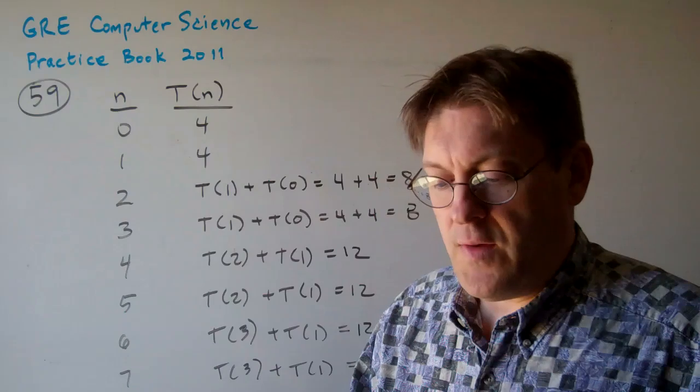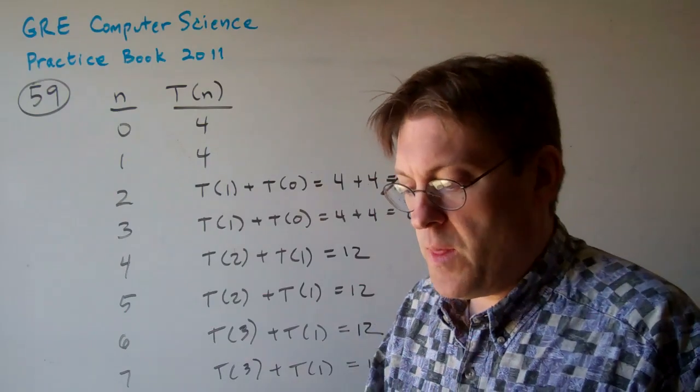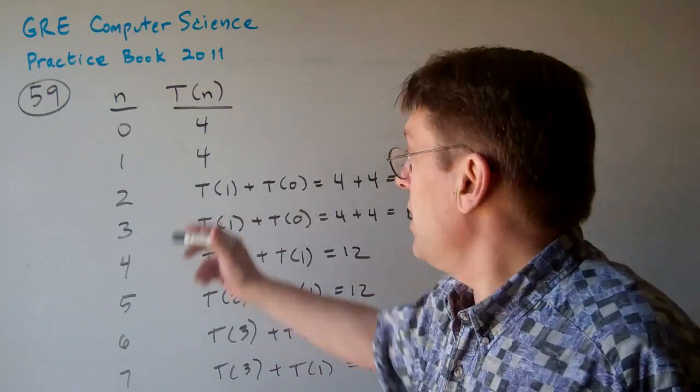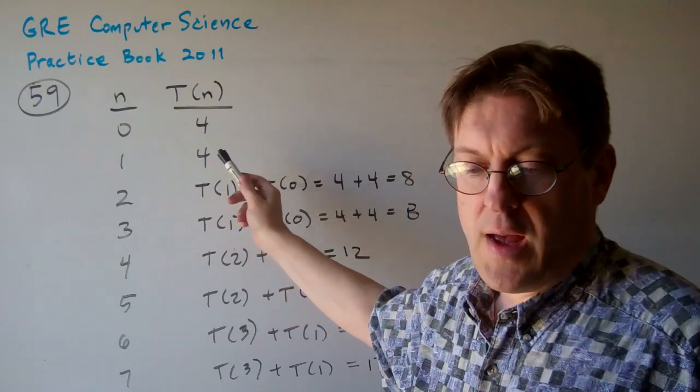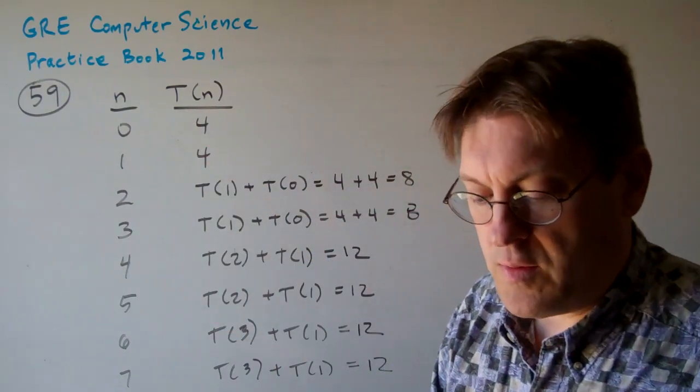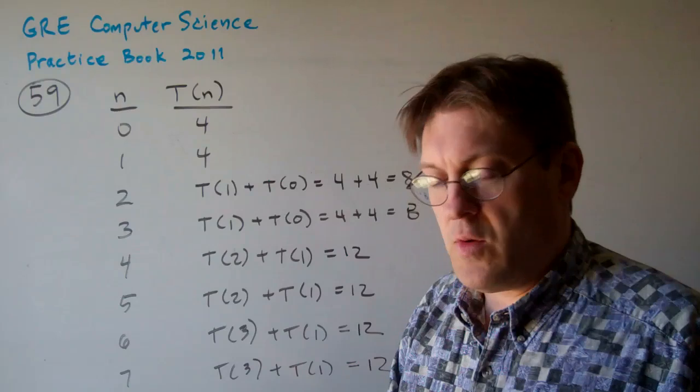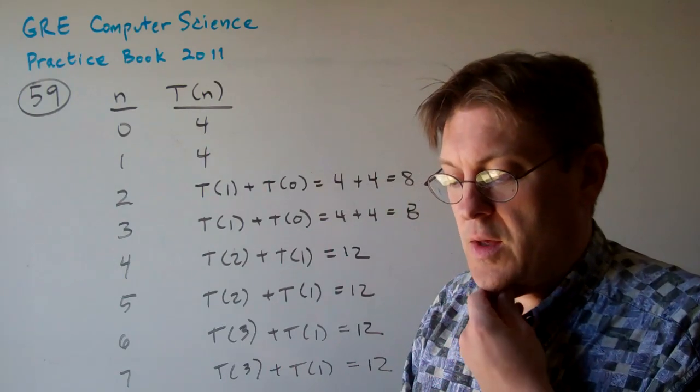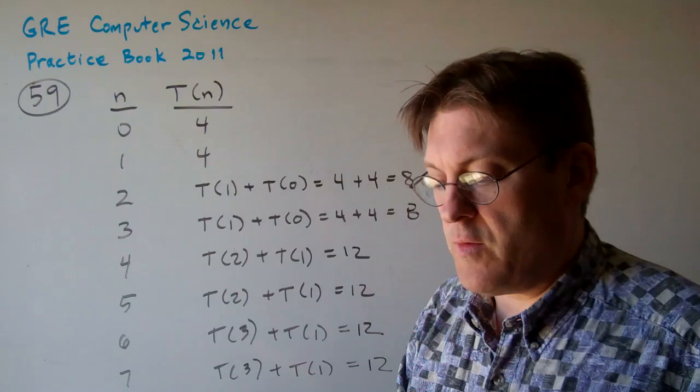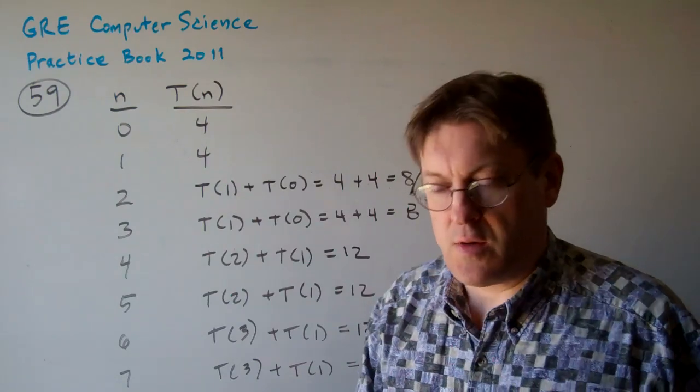Question 59. Let T of n be defined by the function where T of 0 is 4, T of 1 is 4, and then T of n equals T of n divided by 2, the minimum of that, and the floor of that, and then the floor of T of 4, T of n over 4 plus T of n for all integers n greater than 2.